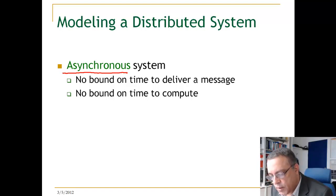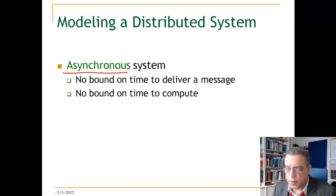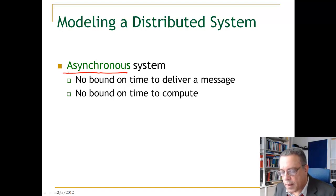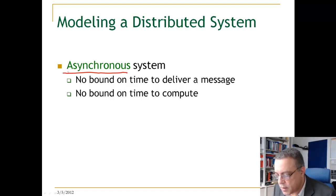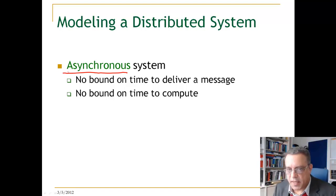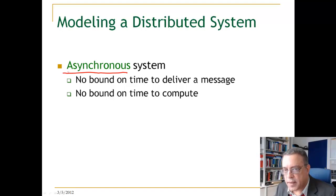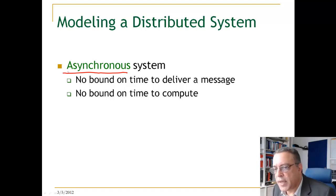The first model we are going to look at is an asynchronous system model. A distributed system is a system where we have a set of nodes connected by a network, and the only way for nodes to communicate is through message passing. In an asynchronous system, we cannot guarantee any bounds on the time to deliver a message. If a node sends a message and the receiver is expecting it, it will take arbitrary time. We also cannot have any bounds on computing at a certain node, because a node might be overloaded or might have crashed.